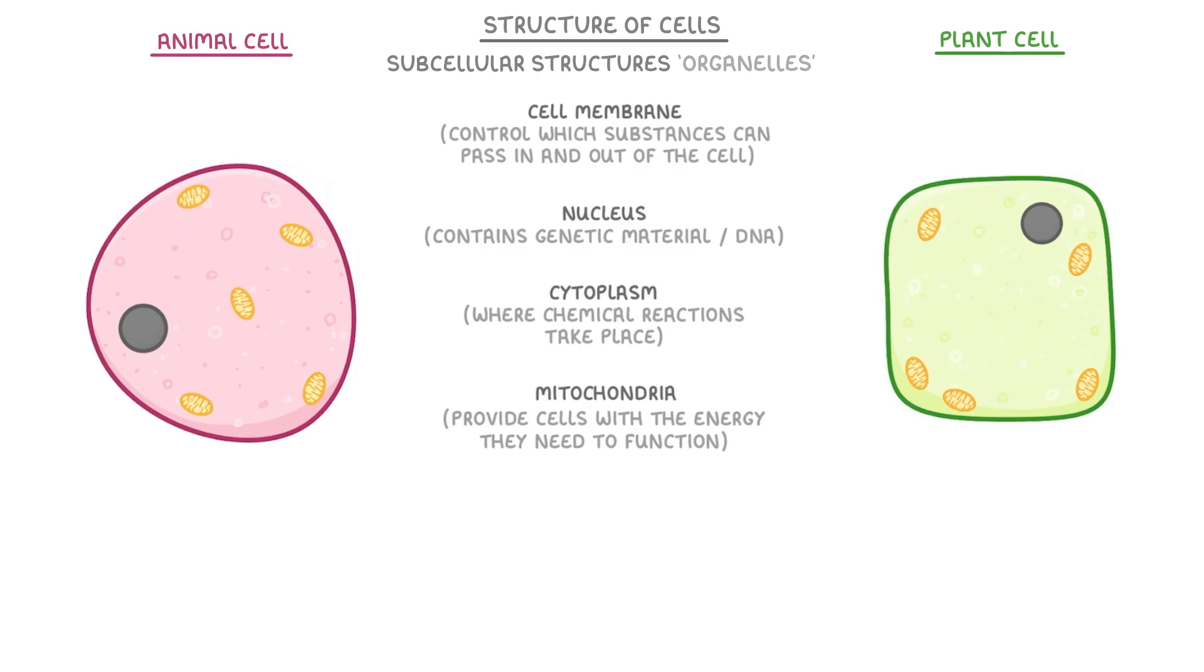And finally, both cell types also contain loads of ribosomes, which are the site of protein synthesis, which just means it's where proteins are made. Now all of these subcellular structures that we've just mentioned are common to both animal and plant cells.